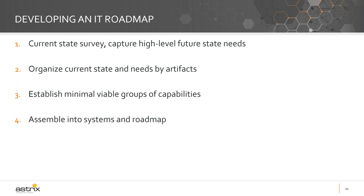The first phase to develop a roadmap is a survey of your current state. What we're also going to try to do while doing that is capture our high-level future state needs at the same time. We're not trying to elucidate every possible way every system is currently used, nor are we trying to capture every possible report someone might want out of the system in some future state. This is an overarching survey of the current state, of how the scientists interact with all of the systems in the IT environment, and what the gaps are in those interactions.